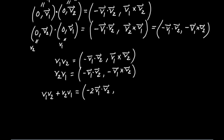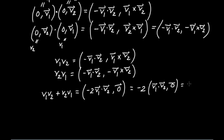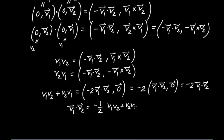And what I get is minus 2 times V1 dot V2 in the scalar. And notice when I add the vector parts together, they cancel and give me the zero vector. I can factor out that minus 2: this is equal to minus 2 times V1 dot V2, with the zero vector, which I'll just write as minus 2 times V1 dot V2.